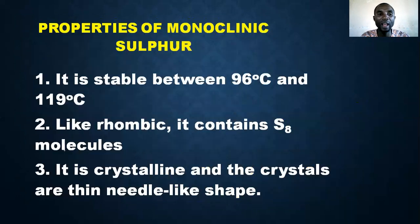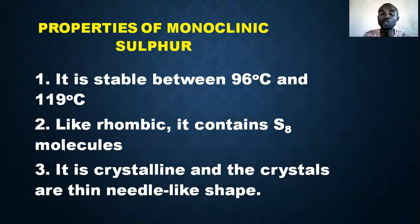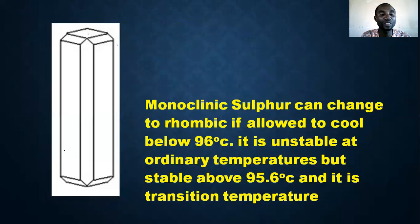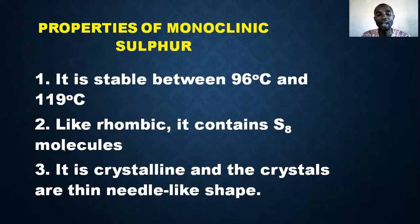Monoclinic sulfur is stable between 96 degrees Celsius and 119 degrees Celsius. Below 96°C it changes to rhombic sulfur. Like rhombic sulfur, it also contains eight atoms of sulfur in one molecule — S₈. It is crystalline, and the crystals are thin and needle-like in shape.